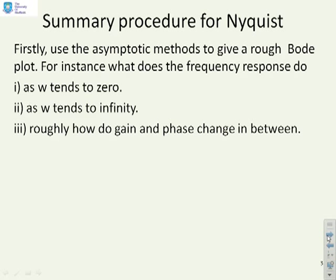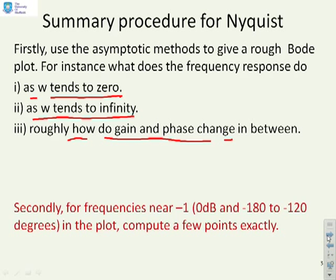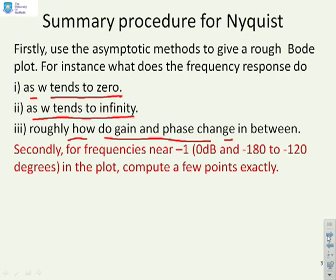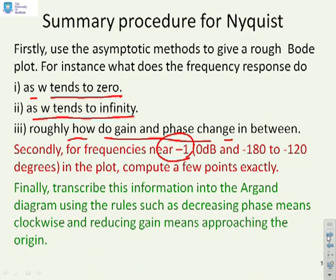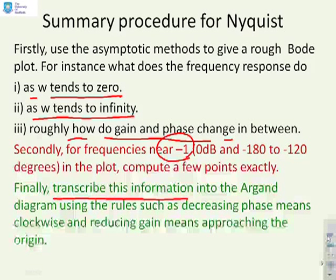A reminder of how we're going to produce the Nyquist diagrams. We need to look at trends like what happens as omega tends to zero, what happens as omega tends to infinity, and roughly how the gain and phase change in between. We might want to be very careful around points like minus one because later on you'll see it's important for us to be accurate in that region. And ultimately, once we've got this information, we transcribe it into an Argand diagram. Using rules such as decreasing phase means I'm moving clockwise, reducing gain means I'm approaching the origin. So that's the sort of procedures we've used for producing Nyquist diagrams, and we're going to do the same here.